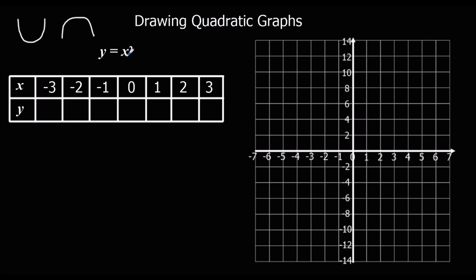So this is the y equals x squared graph. We may get a calculator for these questions, but we may not, so we're going to do it without a calculator now. If you have a calculator, you can just write whatever x is inside a bracket and change the number in there. The brackets are important because the calculator would get the minus signs wrong if you don't put the brackets in.